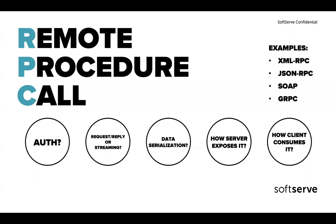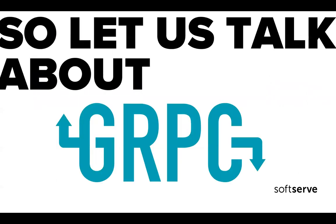Those questions were asked by Google. They were asking themselves how they could build RPCs — they have a large system with lots of connection points and needed something reliable. That's why they started working on gRPC. Before gRPC was open source, it was called Stubby. There were four generations of that internally at Google, and then they decided it was time to release it as an open source tool.